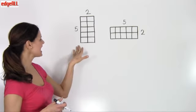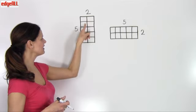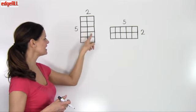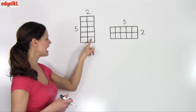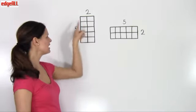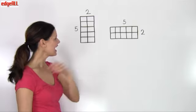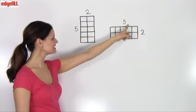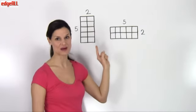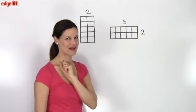So in this case, I have one, two, three, four, five, six, seven, eight, nine, 10 blocks in my two by five rectangle. And in this case, in my five by two rectangle, let's count the number of blocks — we should also have 10.